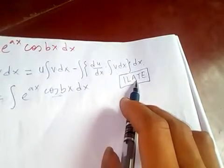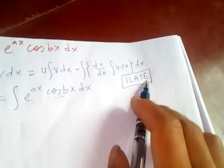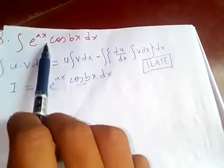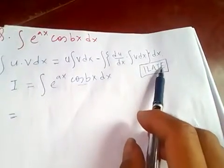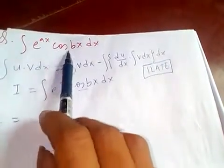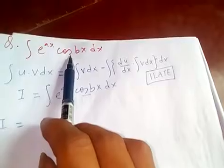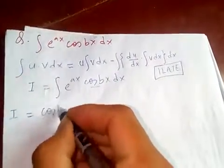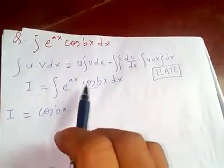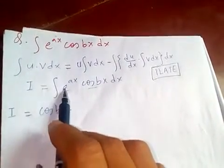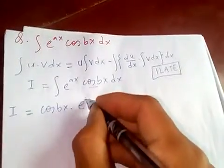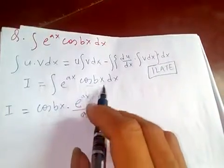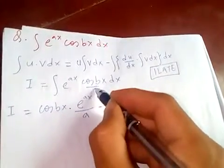In this problem, exponential comes last and trigonometric comes first according to ILATE, so cos bx is our first function and e to the ax is the second function. The integral of the second function, e to the ax, is e to the ax over a.